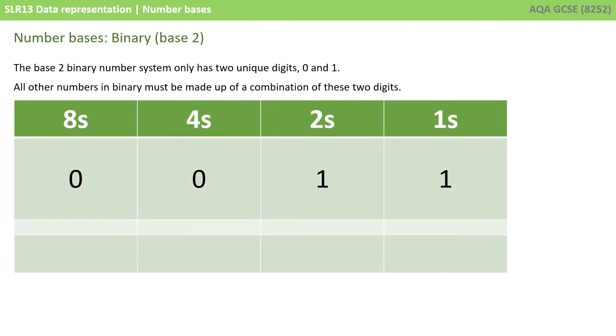With the base 2 binary number system, we only have two unique digits, 0 and 1. All other numbers in binary must be made up of a combination of these two digits. The first thing you'll notice is the weighting of the column headings has changed. Starting on the right, we have the ones column, then the twos, then the fours, then the eights. It's doubling each time, or multiplying by two, and that's because we have a base 2 number system.